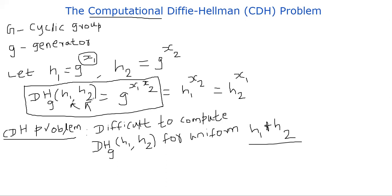So let us consider the other direction. Suppose the Diffie-Hellman problem is hard, meaning given h1 and g, it's difficult to find x1. Does it mean that DH is also difficult to compute, that is DH of h1, h2? We don't know.